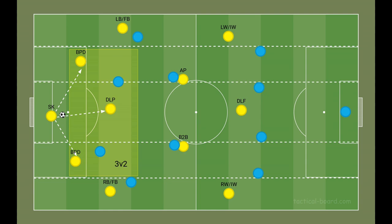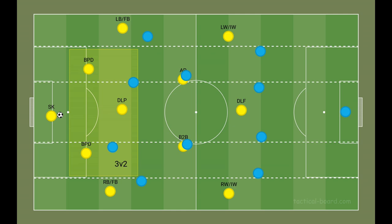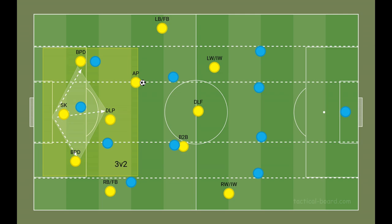From build up, the aim is to have a numerical advantage in front of the first line of the opposition's press. By having the defensive midfielder drop deep within the back line, we create a back 3, and in most cases this will create a 3 vs 2 situation. If the opponents choose to press with 3, due to the full back staying relatively deep during the first stages of build up and the use of a super keeper, the numerical advantage is always on, helping us ease out of our first stage of build up.